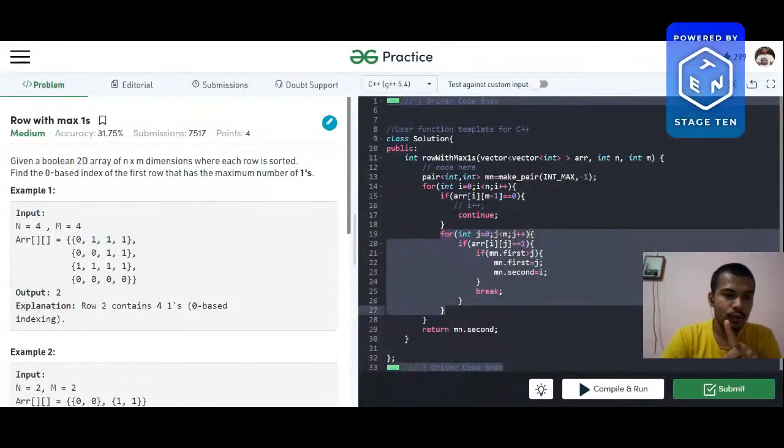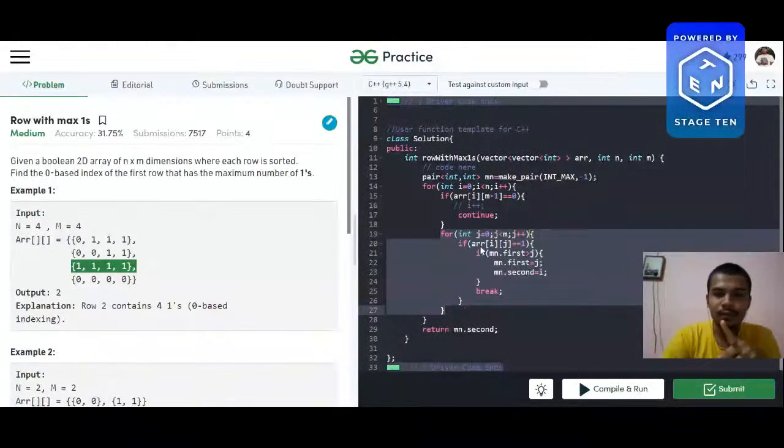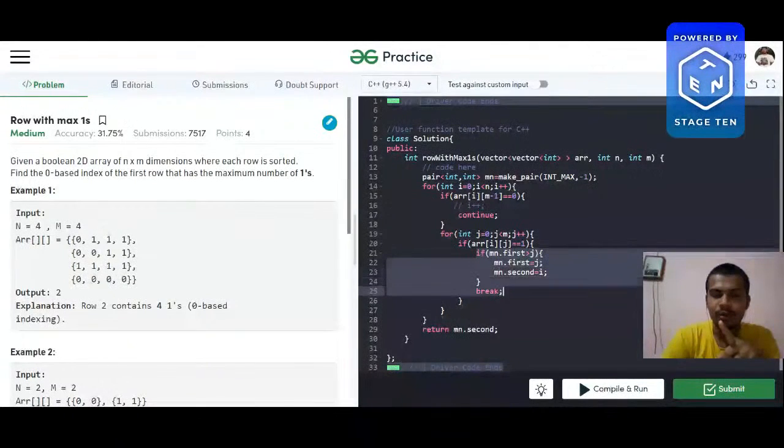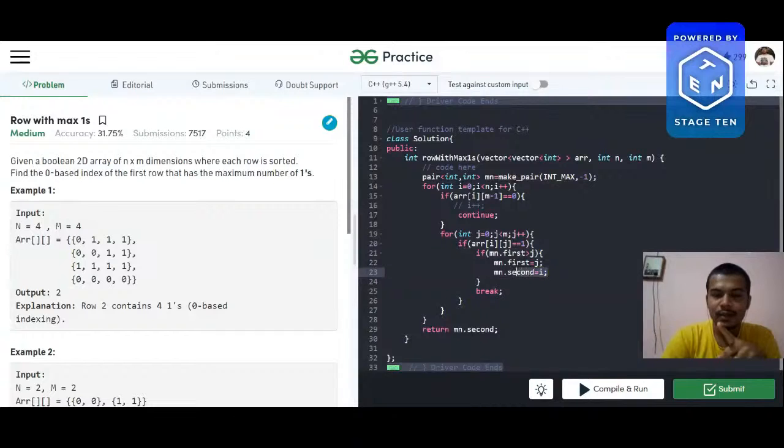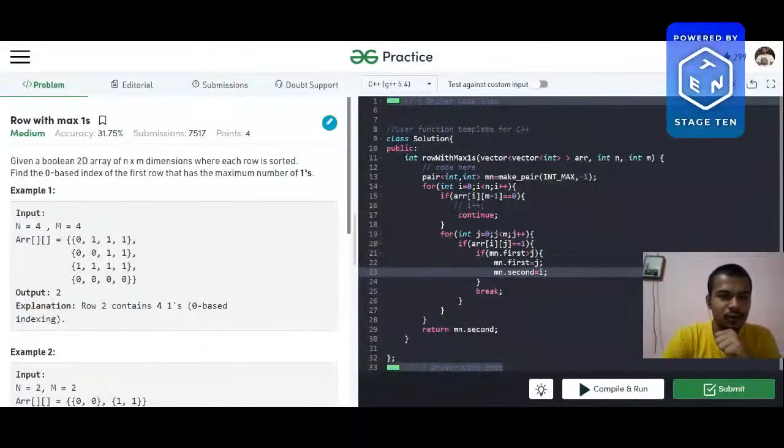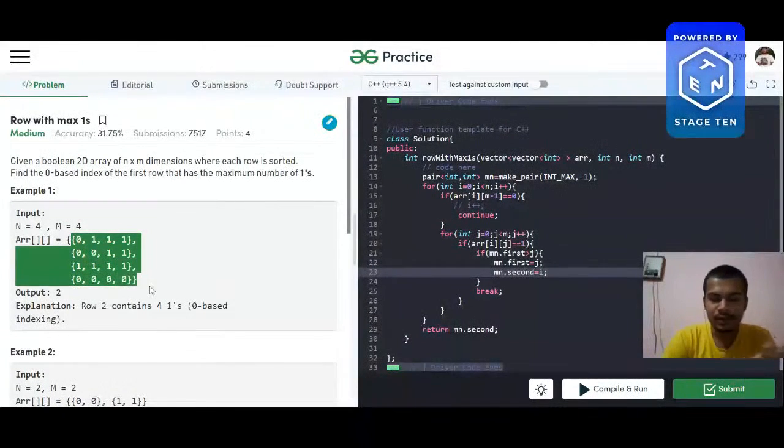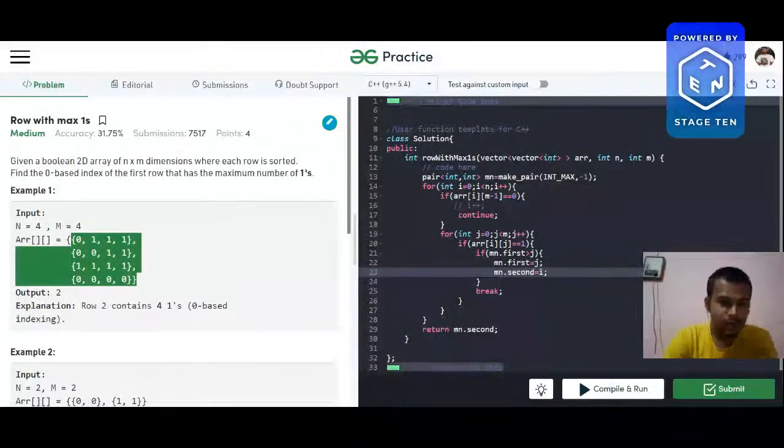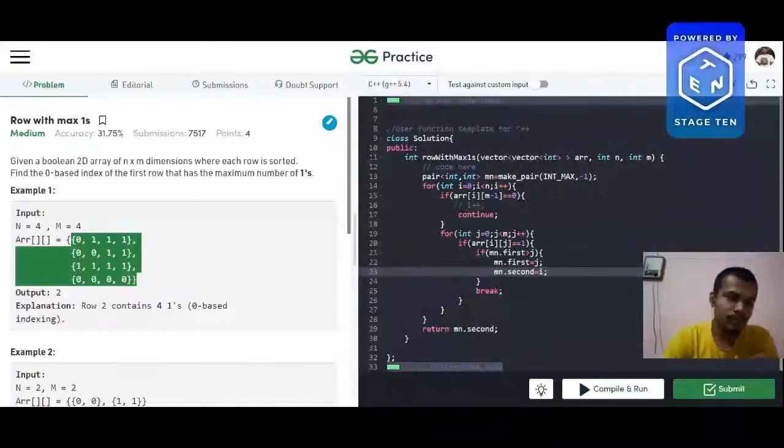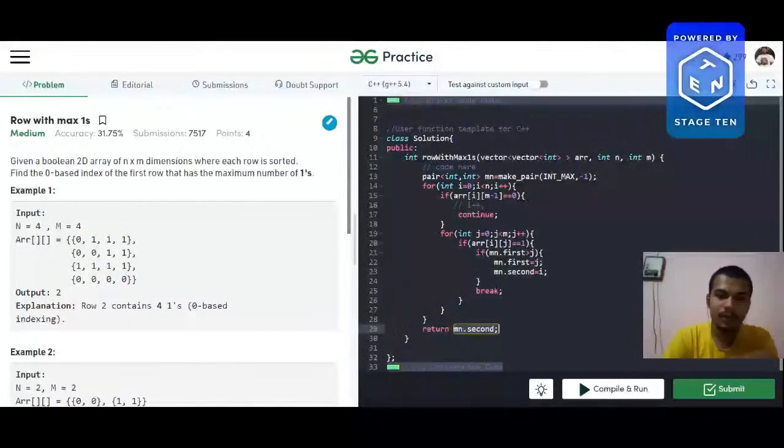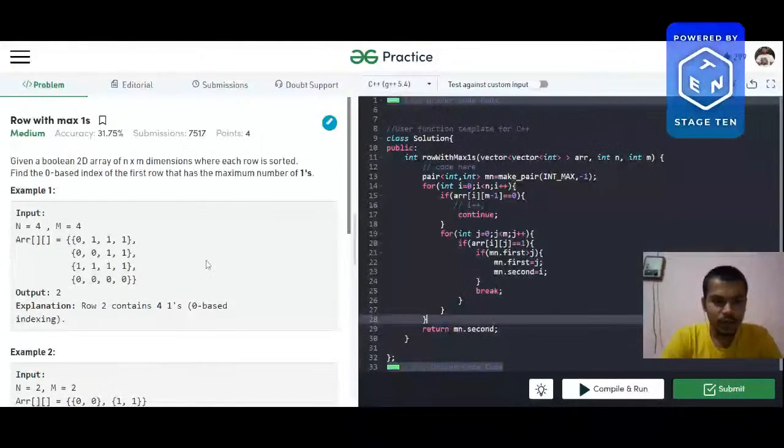Whenever this happens, we assign this column index to our second variable. After this whole thing is done, we'll get our output as column index. So this is how you solve this problem. Hope you like it.